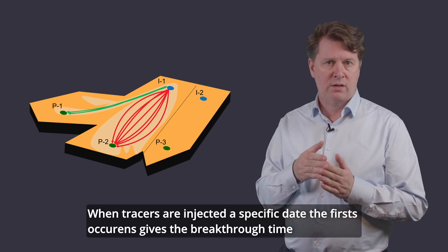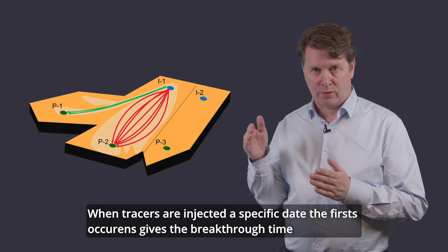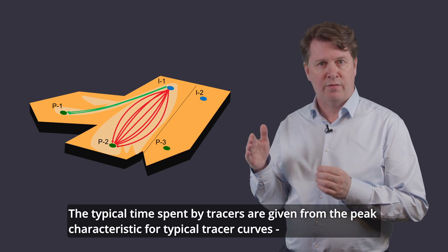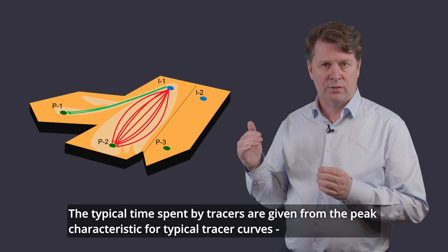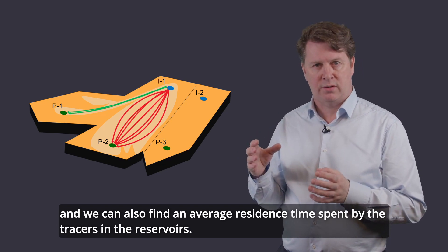When tracers are injected at a specific date, the first occurrence gives the breakthrough time. The typical time spent by tracers are given from the peaks characteristic for tracer curves. And we can also find the average time spent by the tracers in the reservoir.